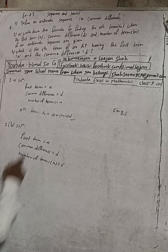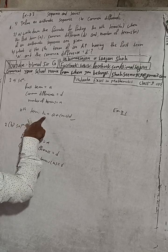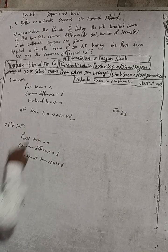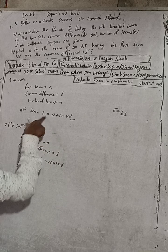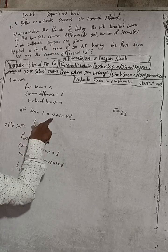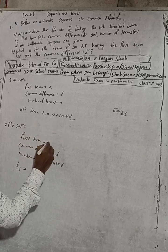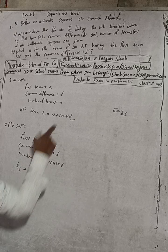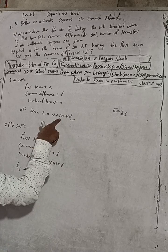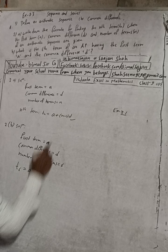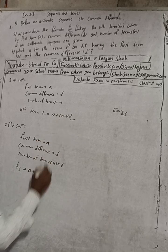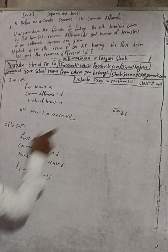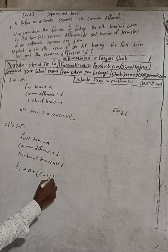Now write t6. Using this formula, in place of n we put 6. Then t6 is equal to a plus bracket, n value here is 6, so 6 minus 1 and difference is d.